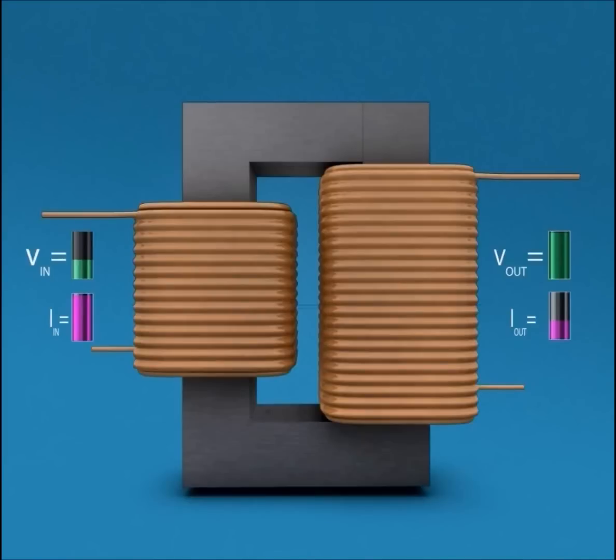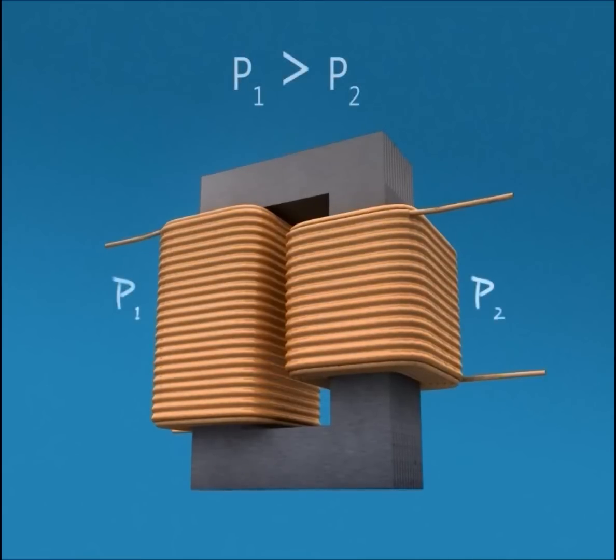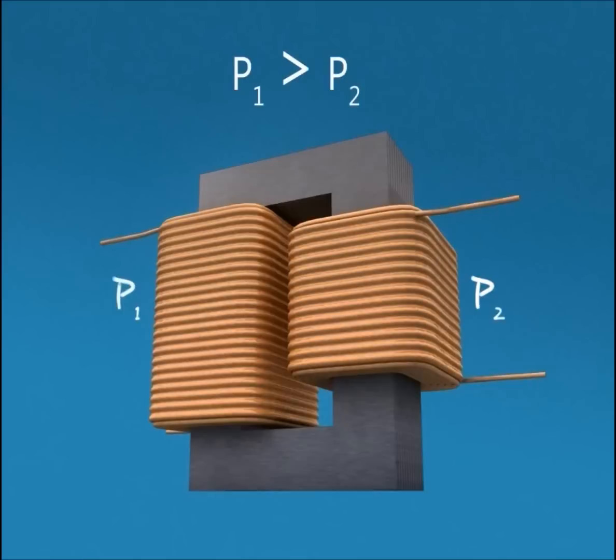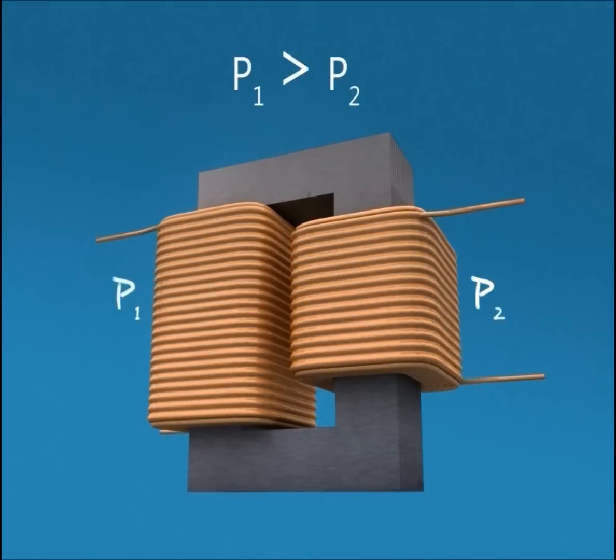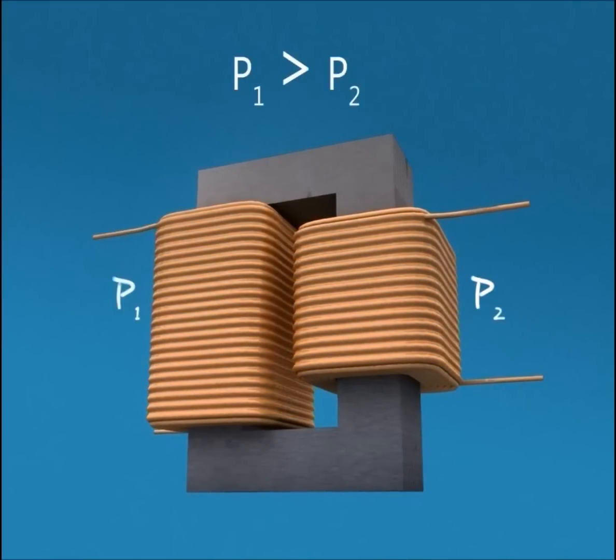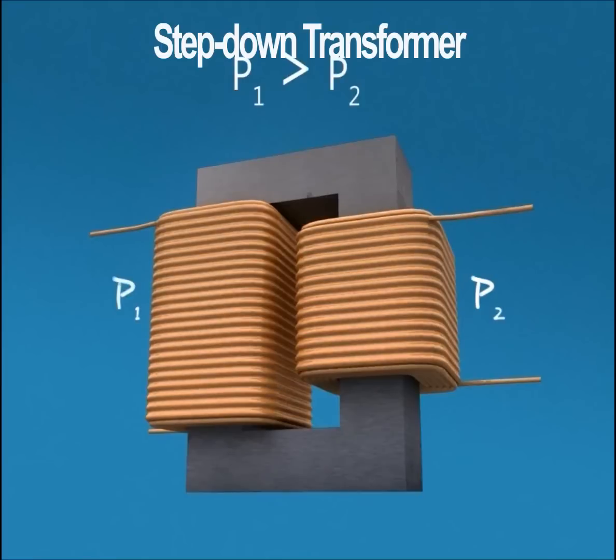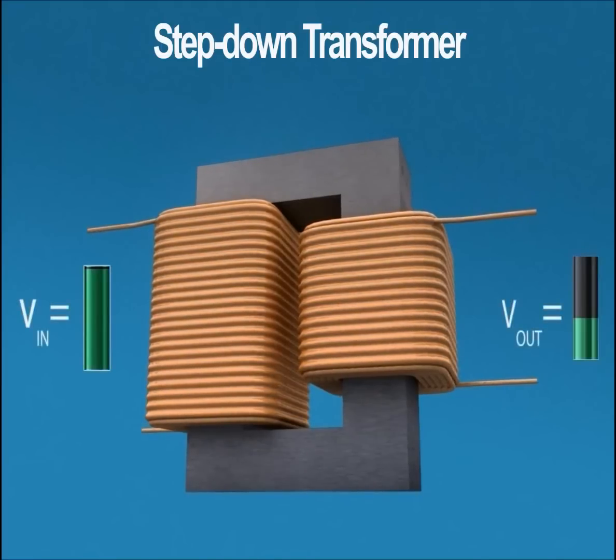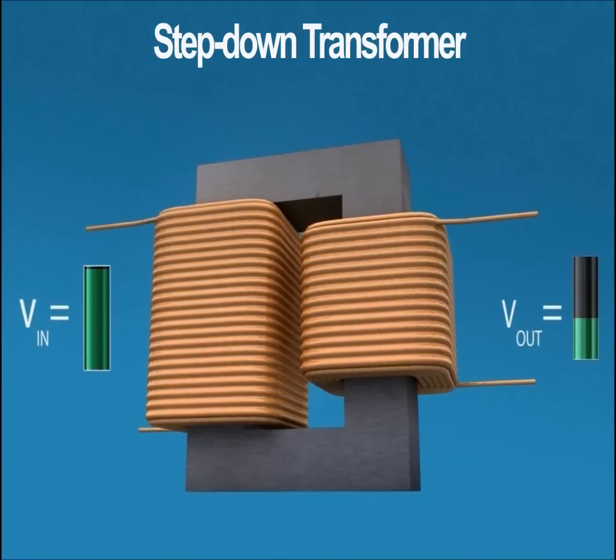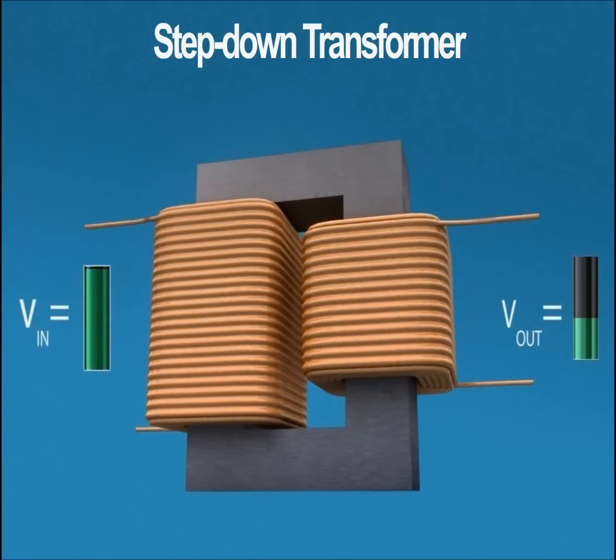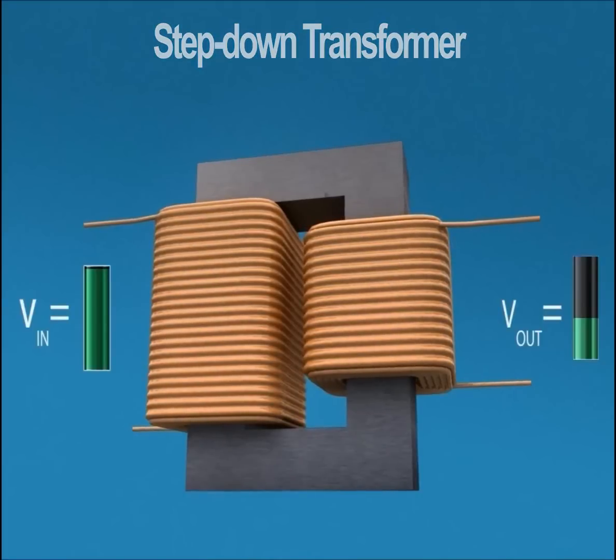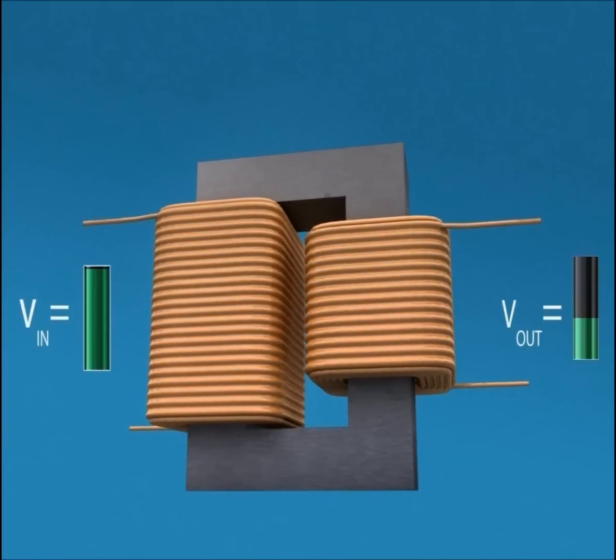Similarly, when primary coil has more number of turns than the number of turns in secondary coil, the transformer is called a step-down transformer, and the voltage induced on the secondary side V out is less than the applied voltage V in on primary side.